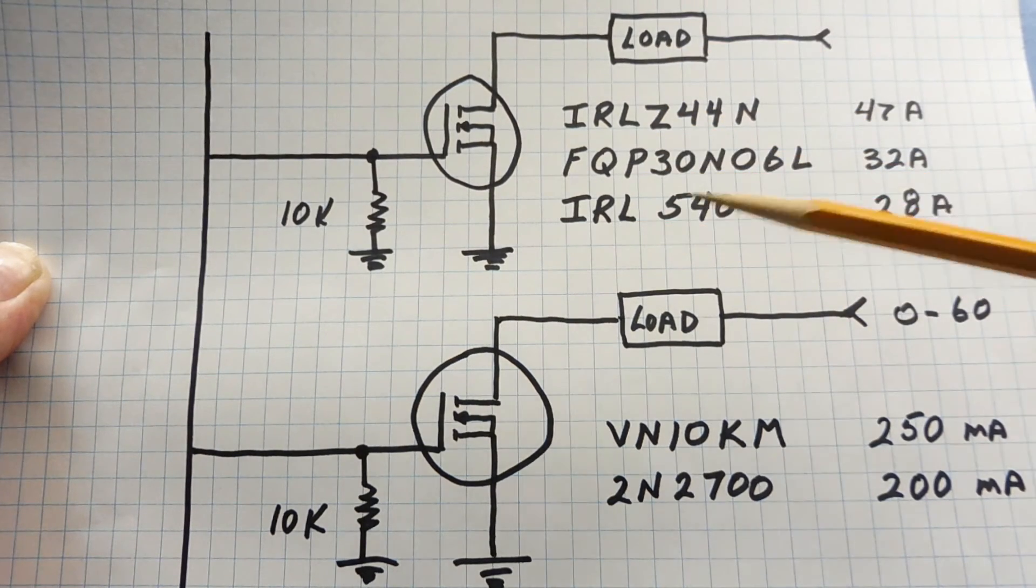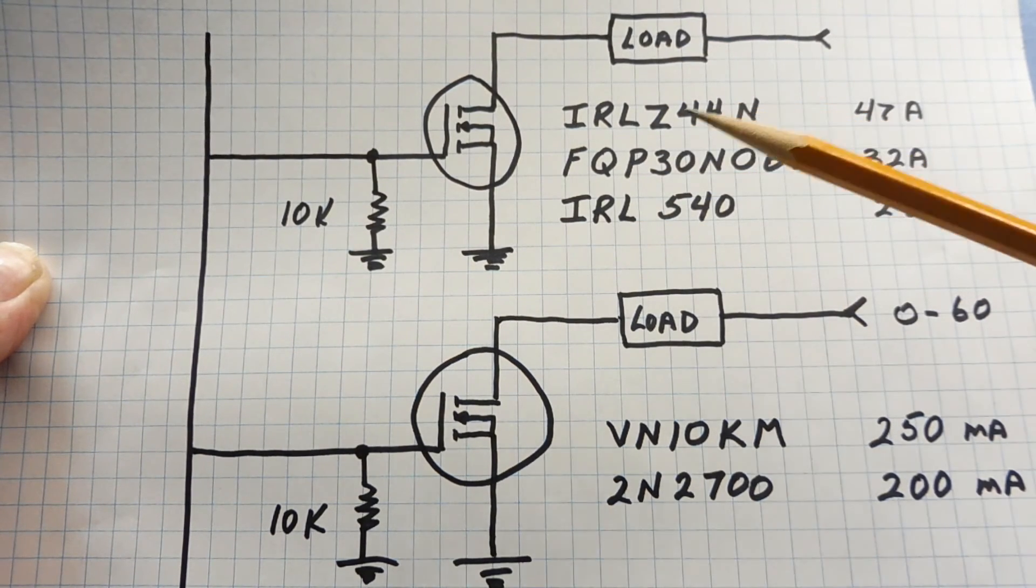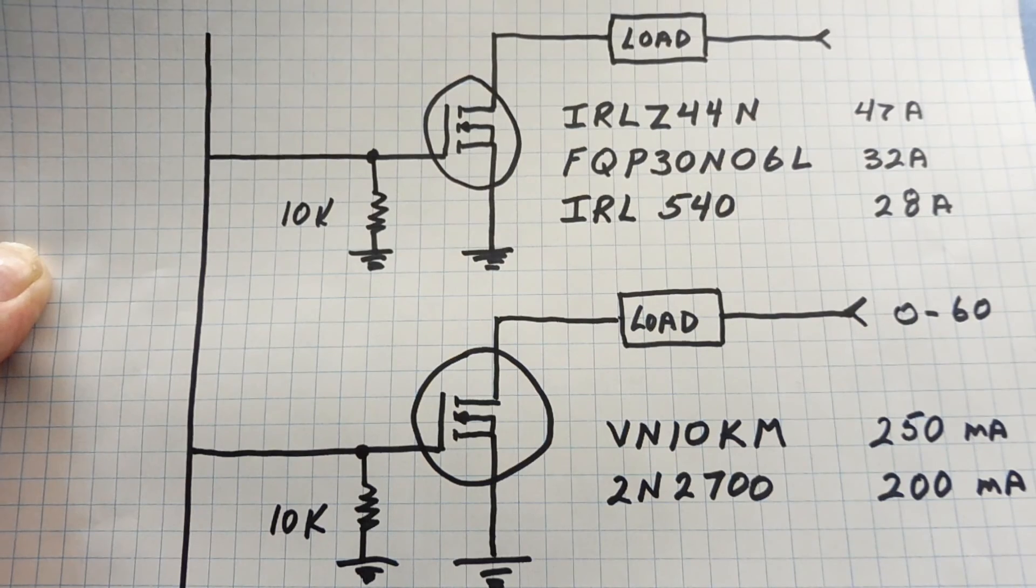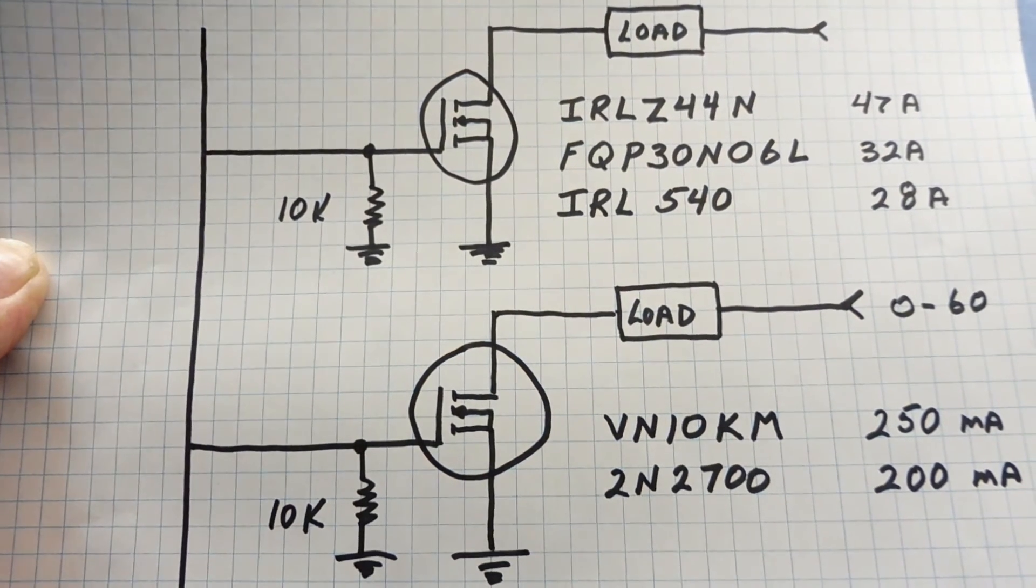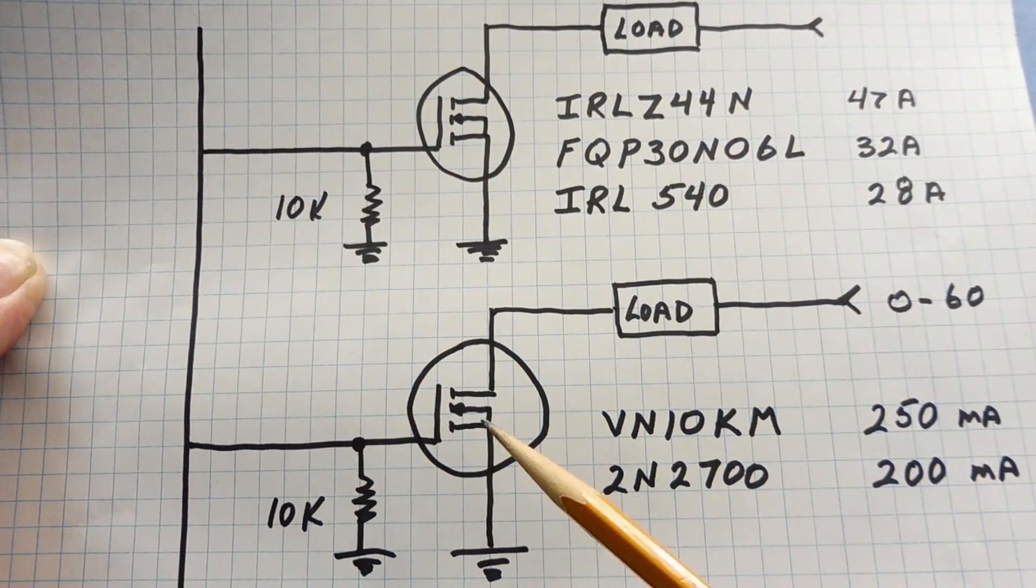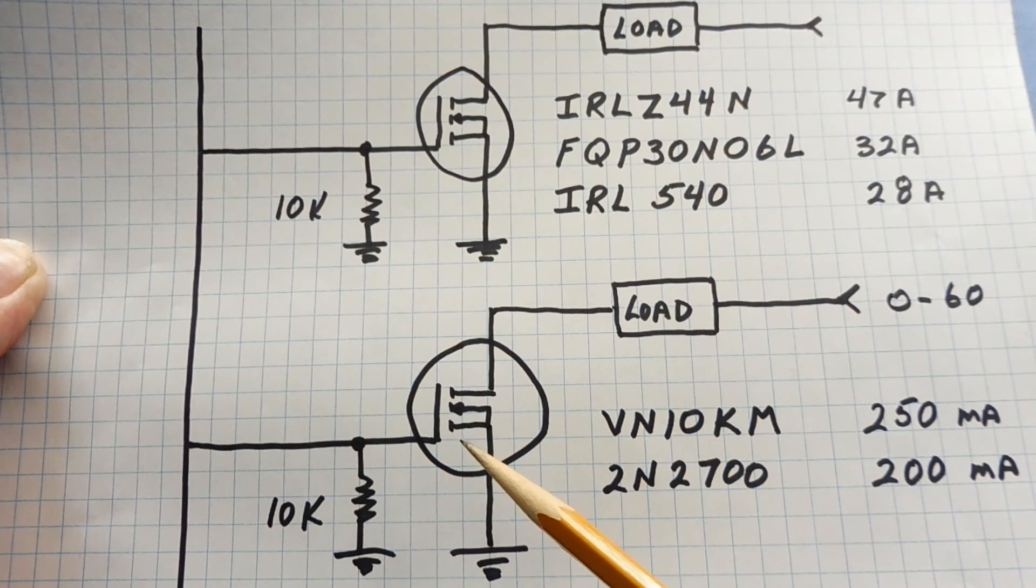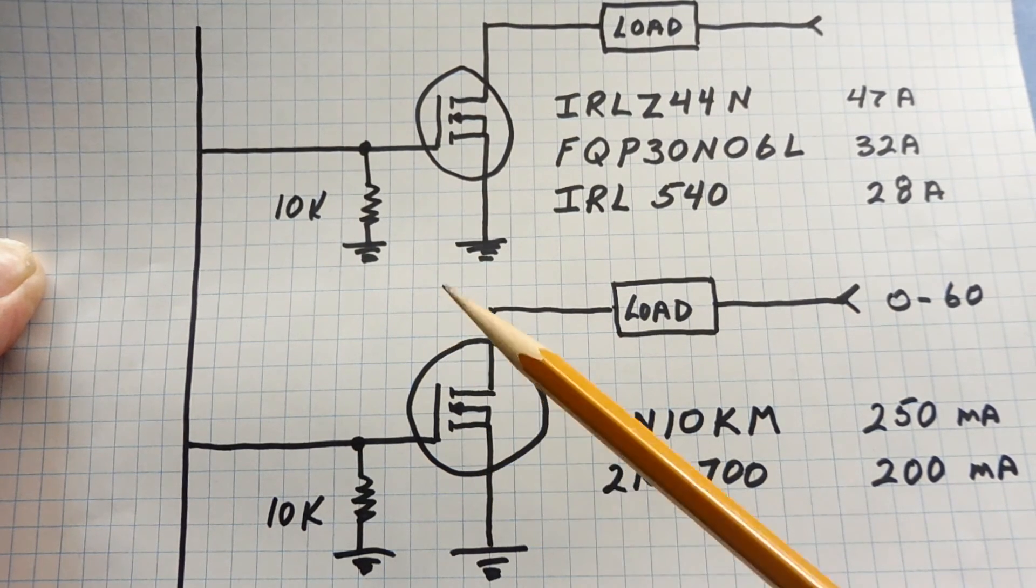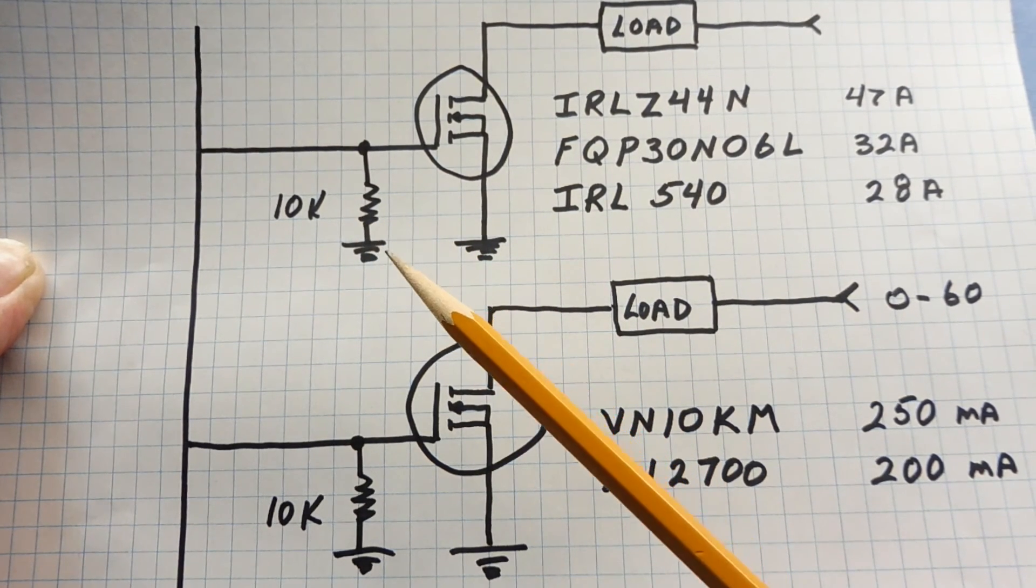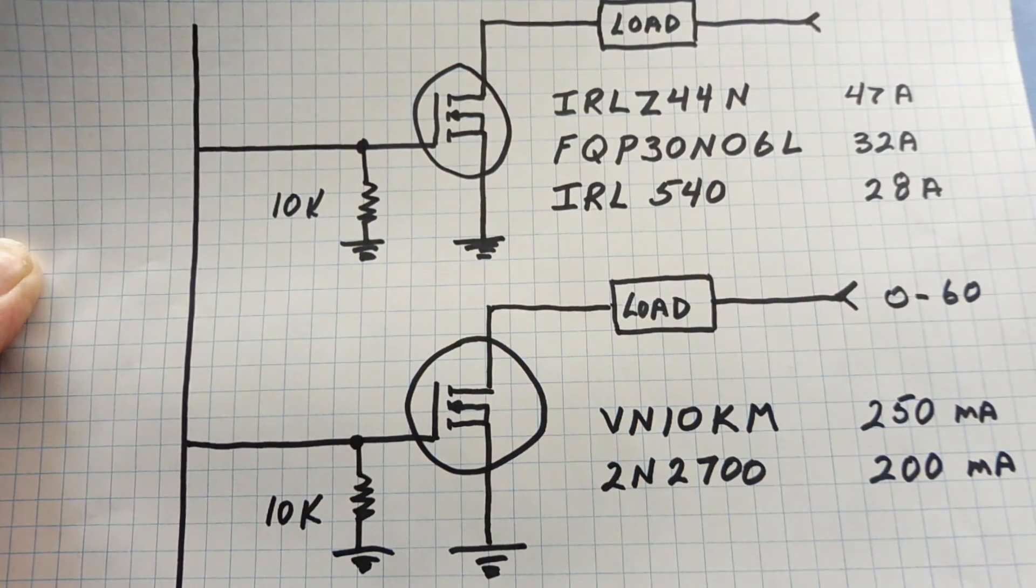Take note of the three part numbers and their current capabilities. These three parts come in a TO220 package, and the MOSFET below is a lower current drive MOSFET, and it comes in a TO92 package. Don't forget the gate-to-source resistor that will bleed off any gate capacitance voltage.